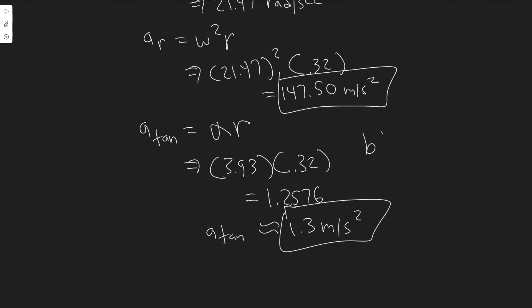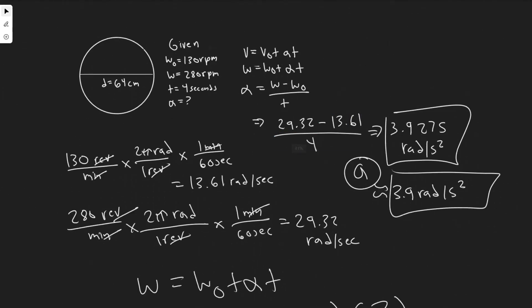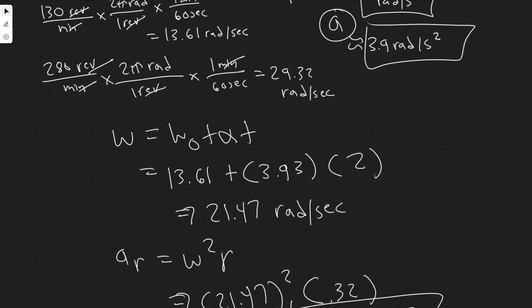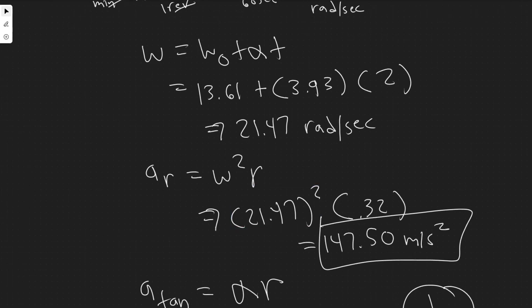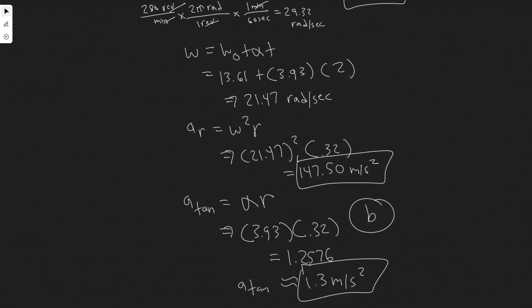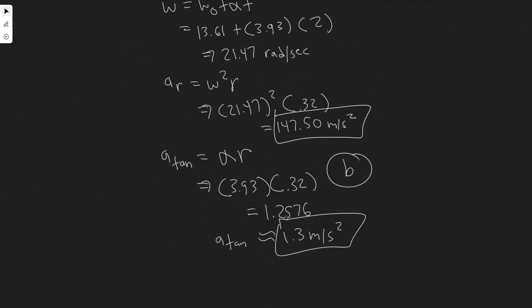So those are the answers to Part B: radial acceleration 147.50 m/s² and tangential acceleration 1.3 m/s². Part A was 3.9 rad/s². All we did was use rotational kinematics — kinematics again to find the angular velocity at two seconds — and then used those formulas to find the two components of acceleration. This is essentially a plug-and-chug problem. Hopefully you found this video helpful.